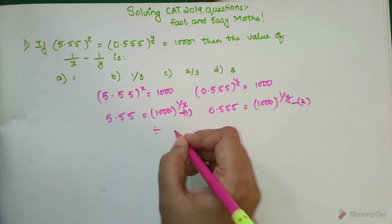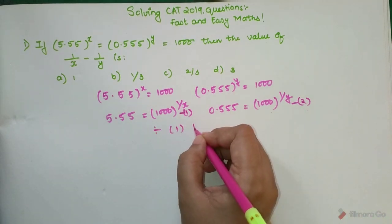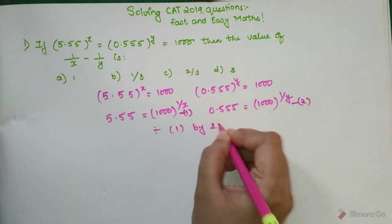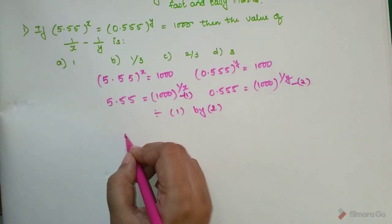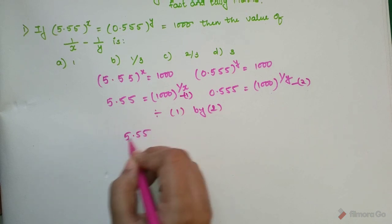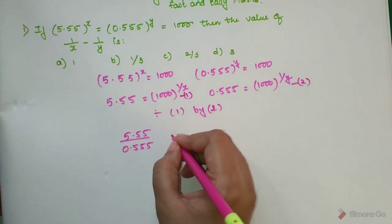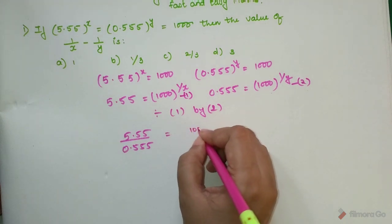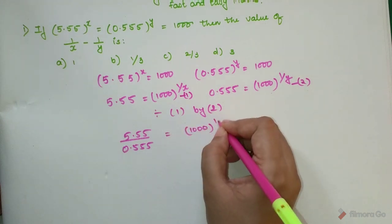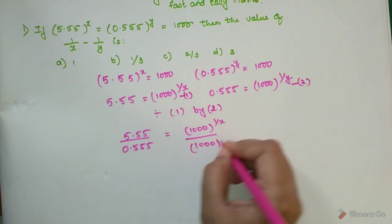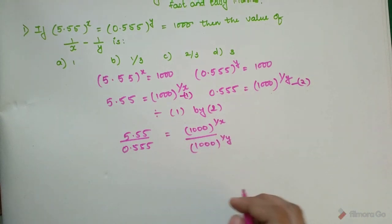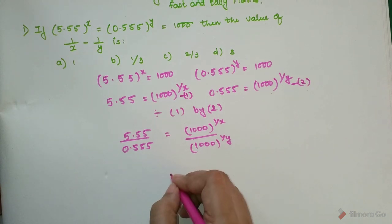And now I will divide 1 by 2. So once we are done with that, I can say that 5.55/0.555 = 1000^(1/x)/1000^(1/y).